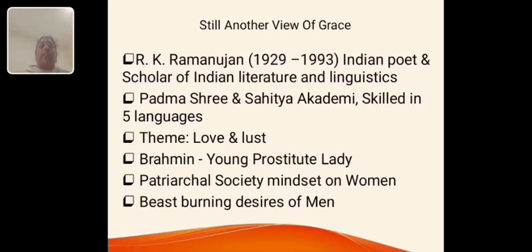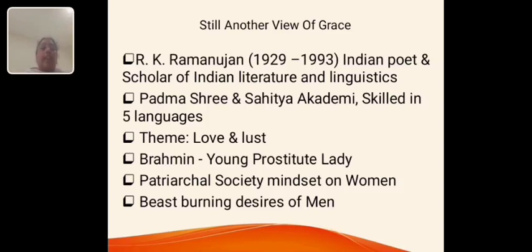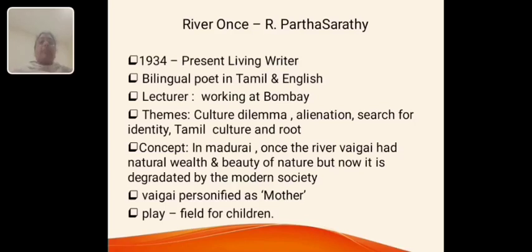The next poem, Still Another View of Grace, is by A.K. Ramanujan. He was born in 1929 and died in 1993. He was an Indian poet and scholar of Indian literature and linguistics. He received a Padma Shri, a Sahitya Academy Award, and was skilled in nearly more than five languages. In this poem, he discussed the concept of love and lust — how a Brahmin boy is in love with a young, beautiful prostitute, and how men in society dominate women and look at women as objects of lust.